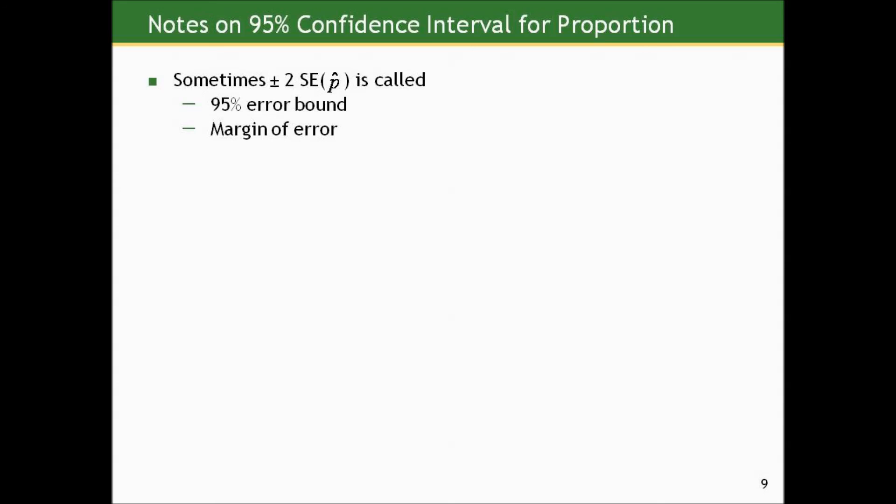Anyway, in the next section, we'll consider what happens in smaller sample situations because, again, as with means, the central limit theorem approximation only works well with larger samples.